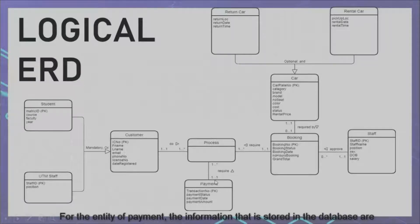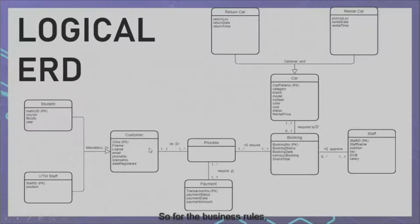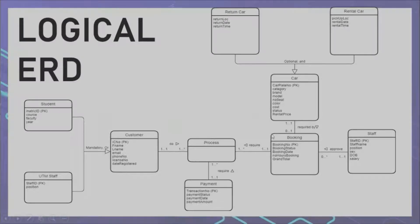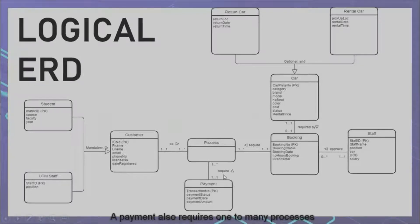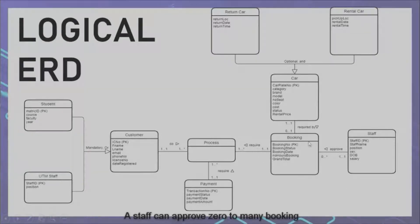For the entity of payment, the information stored in the database includes transaction number as the primary key, payment status, payment date, and payment amount. For the business rules: a customer can do one to many bookings and payments; a booking requires one to many processes; a staff can approve zero to many bookings; and a car is required by zero to one booking.